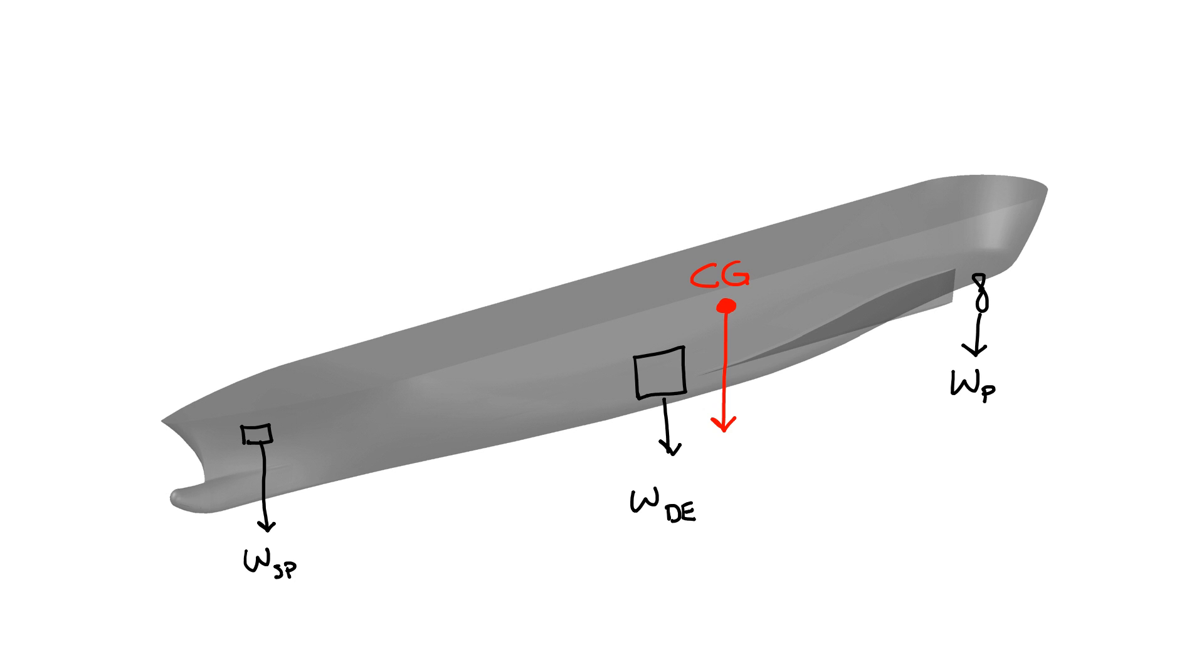Center of gravity is constantly changing because people are moving about, tanks are being drained and filled, fuel is being consumed, liquids, cargo, and ballast are being moved or shifting about due to the ship's action on the water.